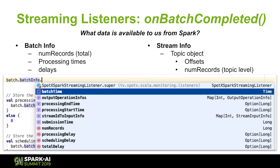All of that should look familiar from the streaming tab of your application master — we have access to it pre-computed, so it doesn't need to do anything extra. That's what we call the batch info: number of records, processing time, and delays. The stream information is another holy grail — it has topic objects, one for every topic or stream you consumed in that batch. That contains the offset ranges processed for each partition in each topic, as well as the number of records processed for that topic.